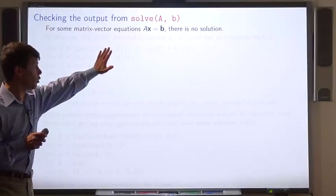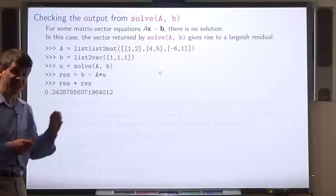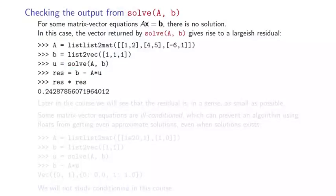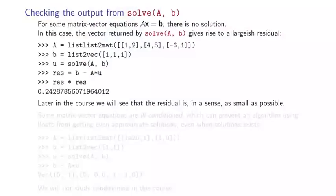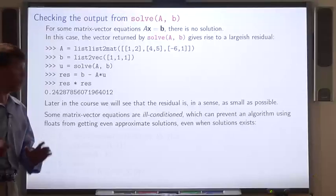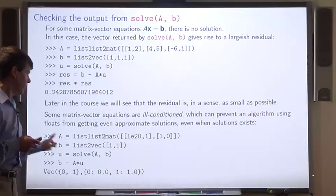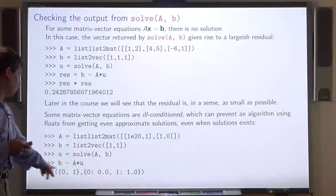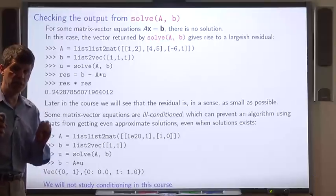For some matrix-vector equations, there is no solution. In that case, the dot product of the residual will not be small, indicating the vector we got is not a solution. The algorithm actually computes the solution that is, in a sense, as close as possible — so the residual is as small as possible. Some matrix-vector equations are ill-conditioned, meaning even if there is a solution, we won't be able to get it using the solver. We're not going to study conditioning in this course — to learn more, study numerical analysis.